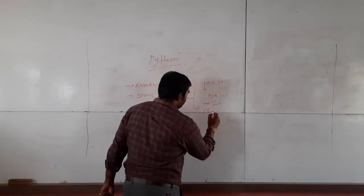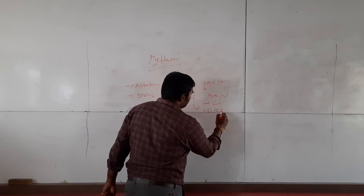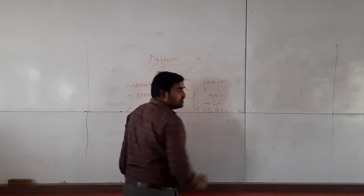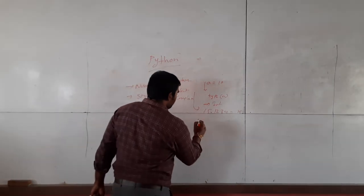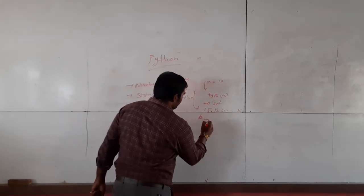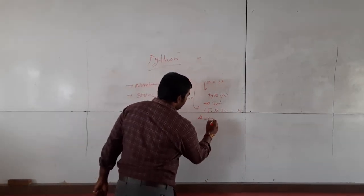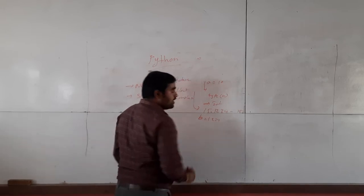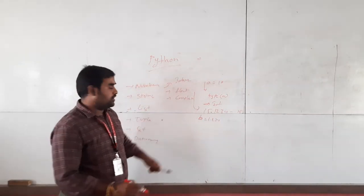For example, 15.1234 — up to 15 values will be taken. An example is B = 1.234. This is the example of the floating data type.